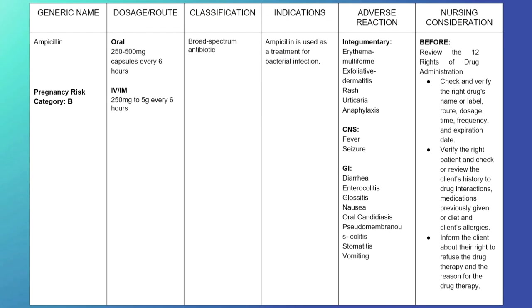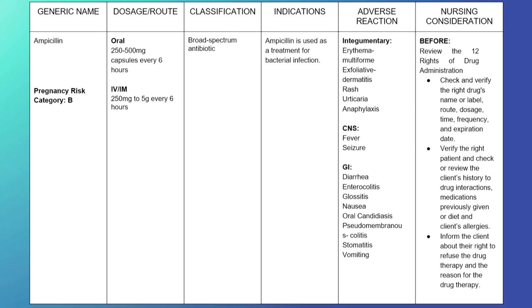For the second drug study: generic name — ampicillin; pregnancy risk category B; dosage and route — oral: 250 to 500 mg capsule every 6 hours; IV/IM: 250 mg to 5 g every 6 hours. Classification: broad-spectrum antibiotic. Indication: ampicillin is used as a treatment for bacterial infection. Adverse reactions — integumentary: erythema multiforme, exfoliative dermatitis, rash, urticaria, anaphylaxis; CNS: fever and seizure; GI: diarrhea, enterocolitis, nausea, oral candidiasis, pseudomembranous colitis, stomatitis, and vomiting; hematologic: agranulocytosis, anemia, eosinophilia, leukopenia, thrombocytopenia, purpura; respiratory: laryngeal stridor.